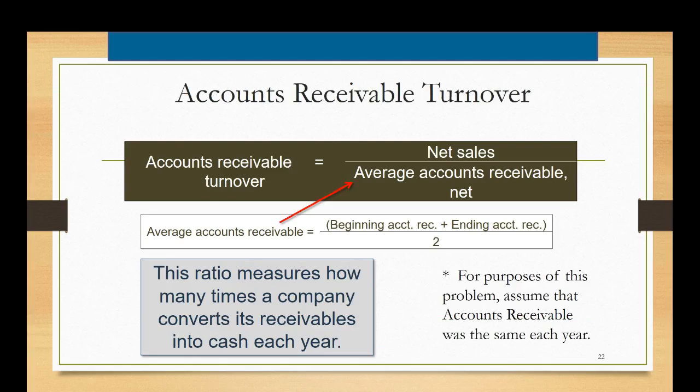Then there's two turnovers. One is the accounts receivable turnover. This is a measure also of short-term liquidity and it's computed by taking net sales on the top divided by average accounts receivable net on the bottom. That means after the allowance is taken out and this ratio measures how many times in a year a company converts its receivables into cash. So if a company has credit terms of 30 days you would expect them to turn their accounts receivable over about 12 times a year because they should be collecting it once a month.